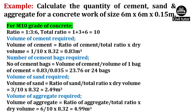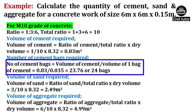The required number of cement bags is calculated using the formula: volume of cement upon volume of one bag of cement. Volume of cement is 0.83 and volume of one bag of cement is 0.035m³. So on substituting these values, the number of cement bags will be equal to 24 bags.